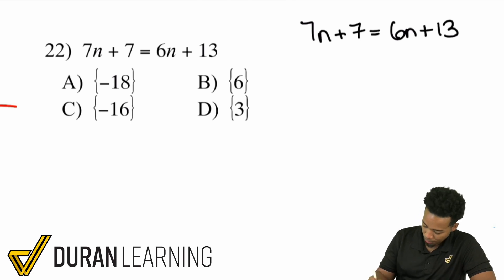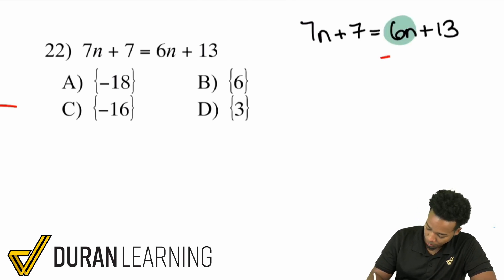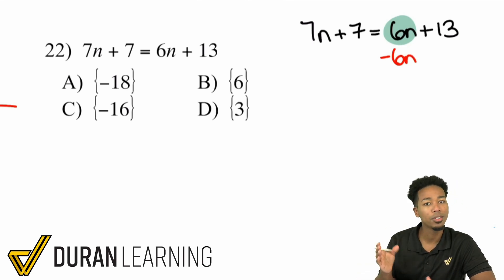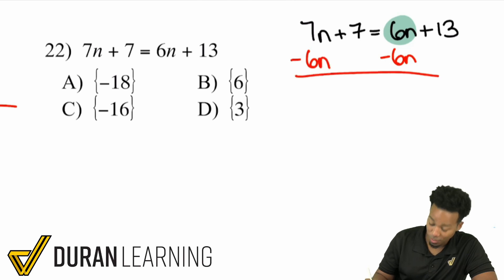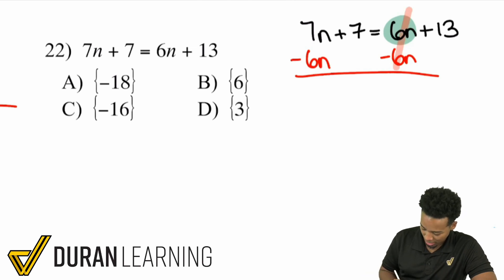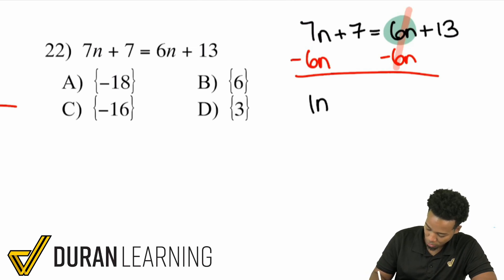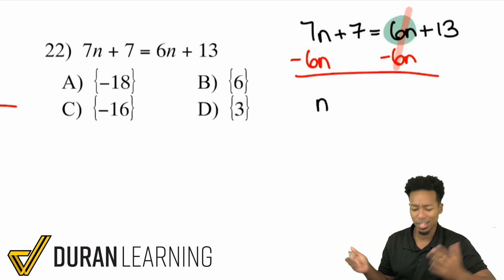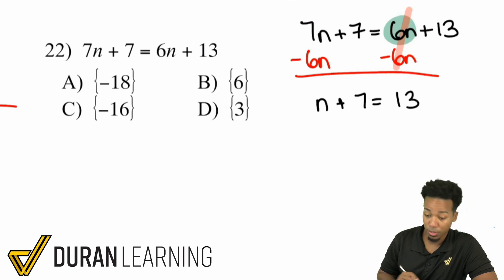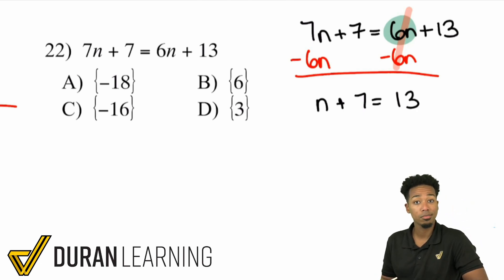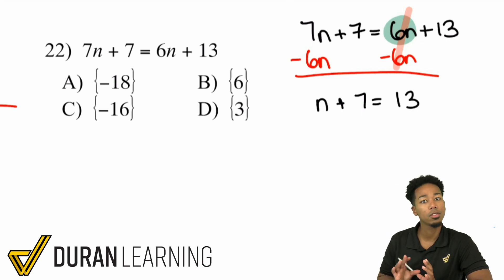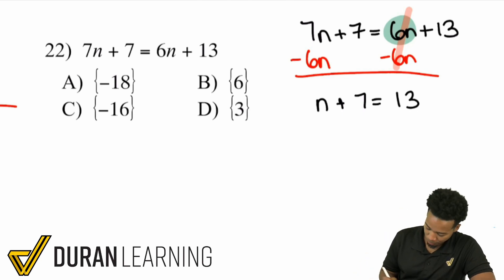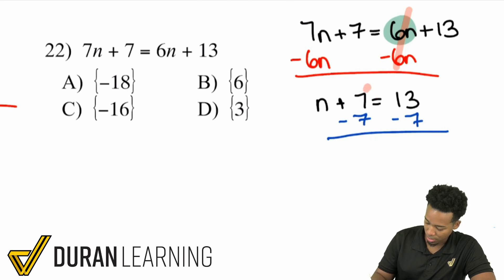If I perform opposite operations, that's how I can eliminate it from one side to the other. So if I want to get rid of 6n, what I need to do is subtract 6n. Just remember, do the same thing to both sides. So I'll subtract 6n over here as well. What's going to happen is it cancels on the right side, leaving me with one n. Rewrite everything else: n plus 7 equals 13. Now my next step is solving this equation like normal. I'll do the opposite of adding 7 — subtracting 7 from both sides — canceling out on the left side, leaving me with n equals 6.